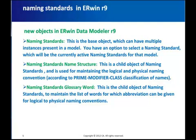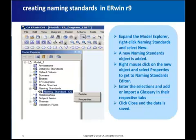Since naming standards is now part of a model, their options are also part of the naming standards objects. You create a new naming standards object from the naming standards menu in Model Explorer. It will have the same name structure to qualify naming options such as class, prime, modifiers, and a naming standards glossary of words to add or import. Please note that only the location has changed — the fundamental functionality remains the same. You can create a naming standards object simply by right-clicking on naming standards in Model Explorer and clicking New. Right-click on the object created to go to its properties, and the naming standards option editor appears, which has the same functionality as before. Once saved, these options will become part of the model.